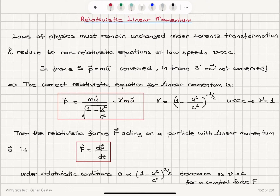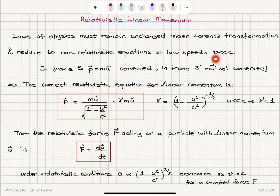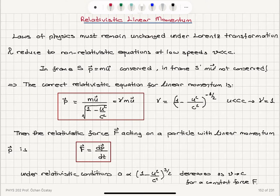Relativistic linear momentum. Since we have a relativistic correction on the velocity as reported by an observer, we must have a relativistic correction on the linear momentum as well. Laws of physics must remain unchanged under Lorentz transformation and should reduce to non-relativistic equations at low speeds when v is much less than c. In the S reference frame, P equals mu is conserved, but in the S prime reference frame, mu prime is not conserved. Therefore, conservation of linear momentum cannot be valid with this classical expression.